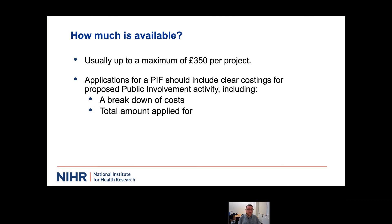Normally the maximum is £350. When applying for the fund, respective regions will have different processes, but generally speaking the maximum amount is about £350. When putting in your PPI application, you'll be asked to set out a breakdown of costs and an overview of the planned activity — it's almost like a mini funding application. This ensures that when it's assessed, the reviewer has a clear idea of what you're doing, how much money you're applying for, and where that money's going.